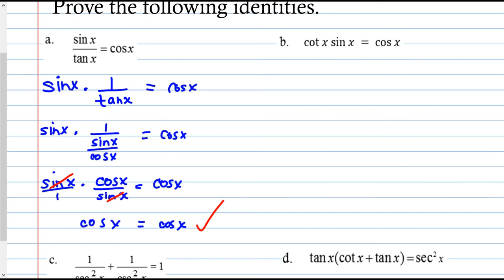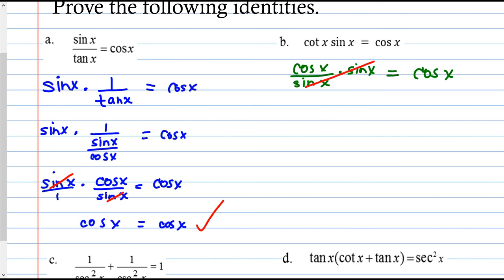Part B, same idea. We have sine x times cotangent x and we need to show it equals cosine x. I can change cotangent — like tangent, it's made of sine and cosine. Tangent is sine over cosine, but cotangent is the reciprocal: cosine over sine. So: sine x times (cosine x over sine x). The sine terms cancel, and I'm left with cosine of x equals cosine of x. This one was a lot easier.